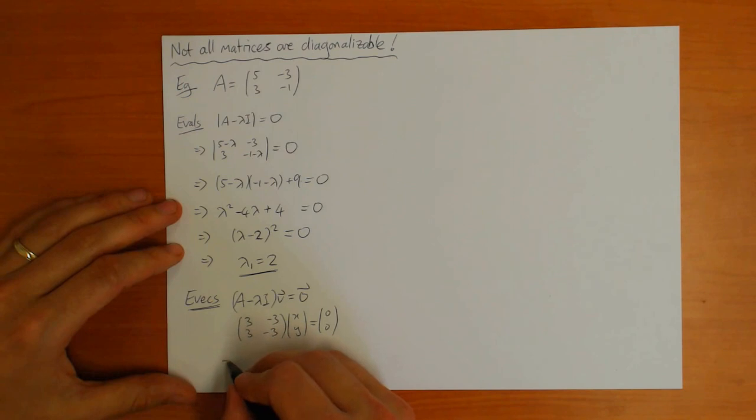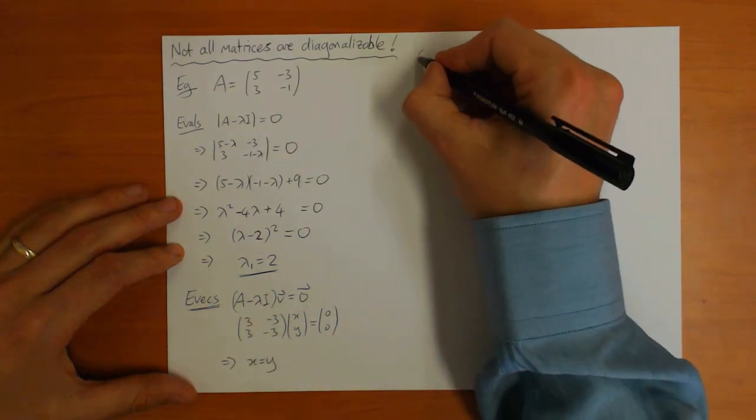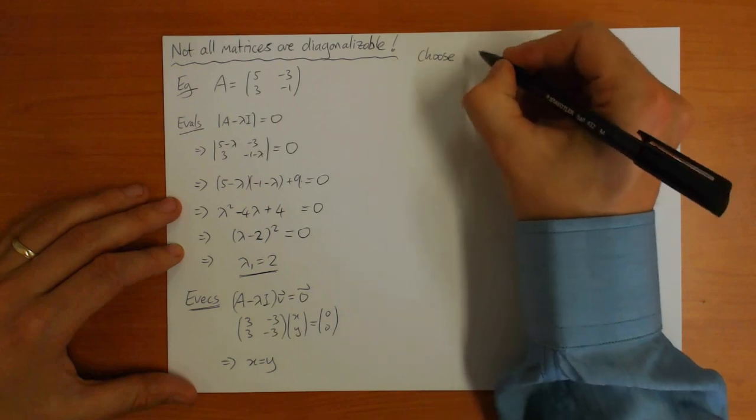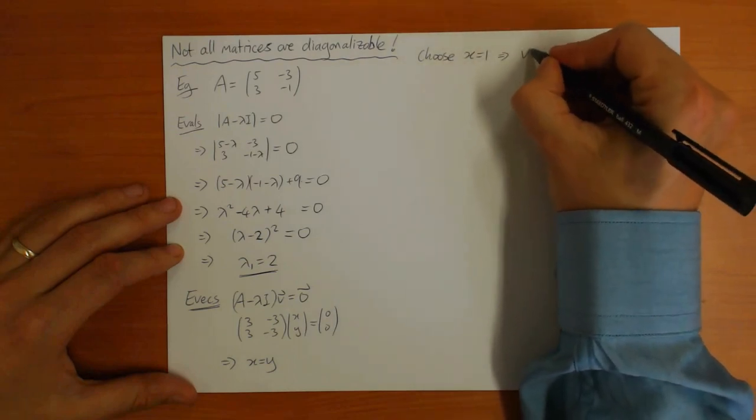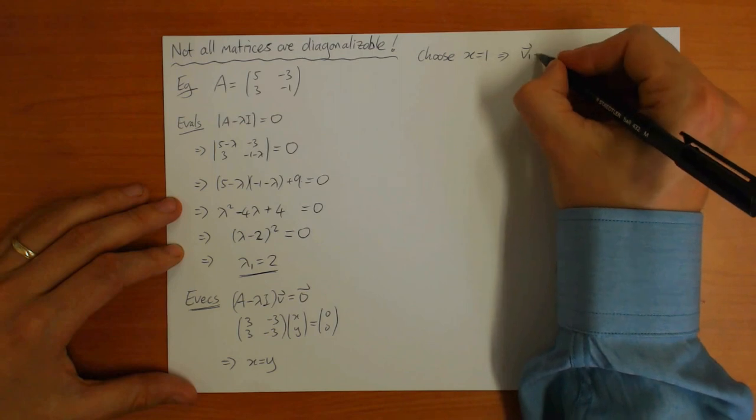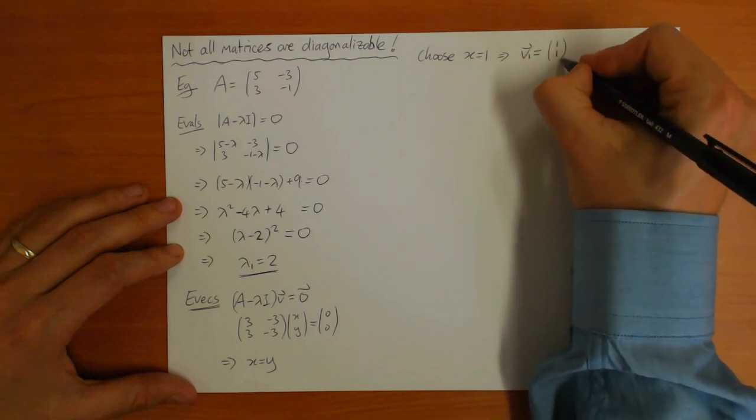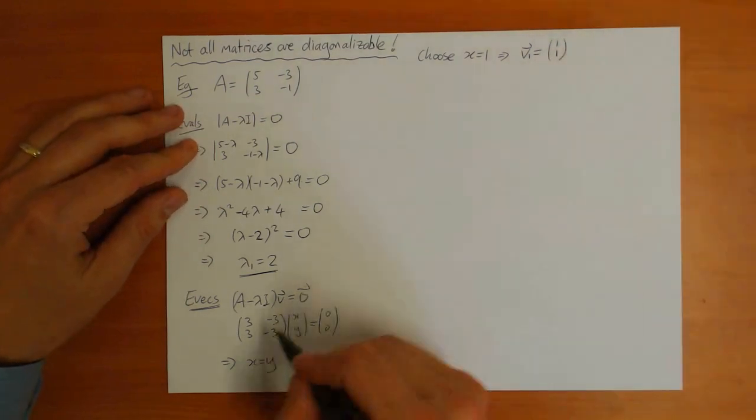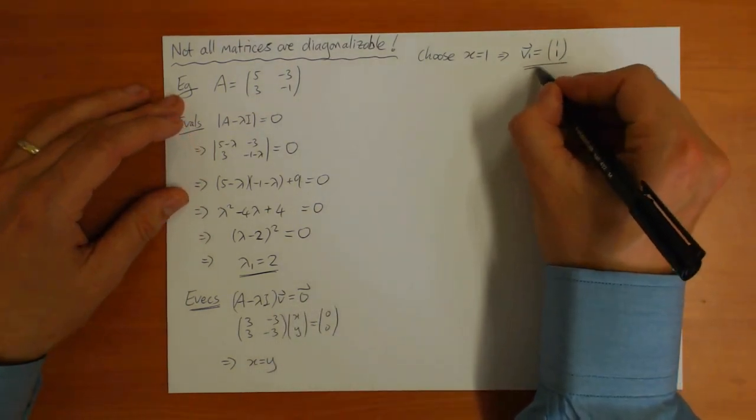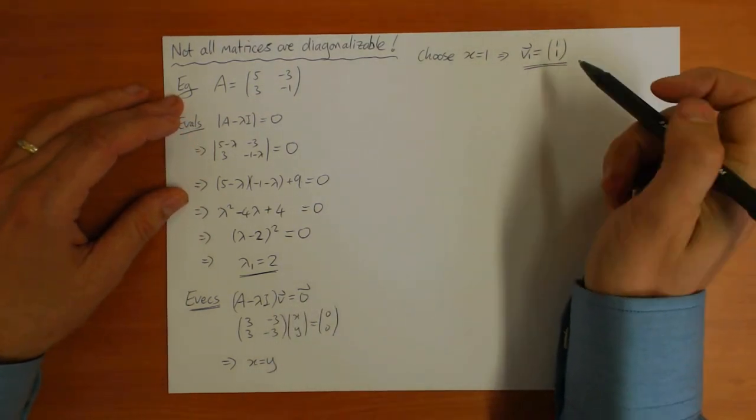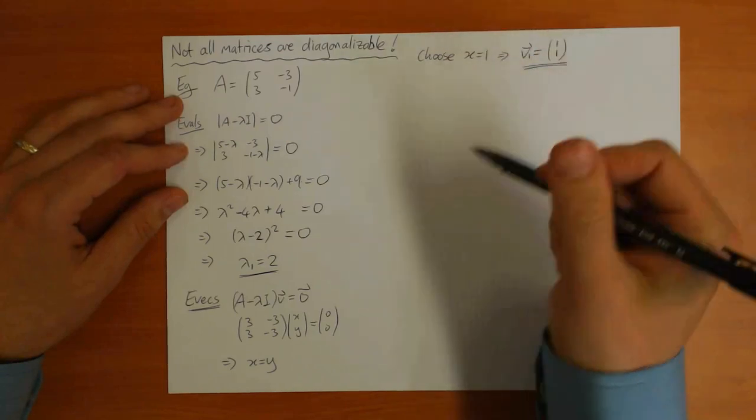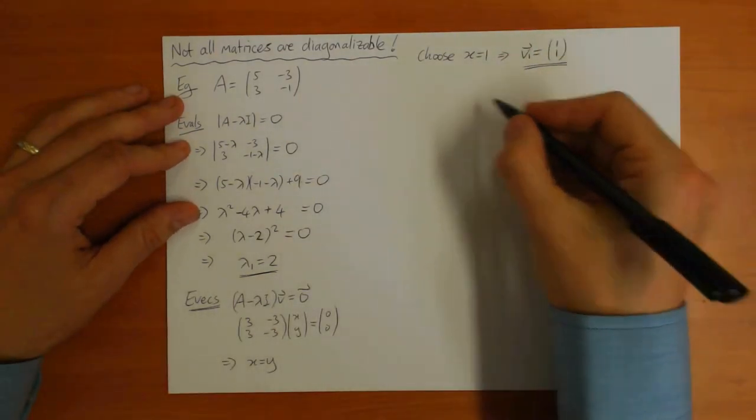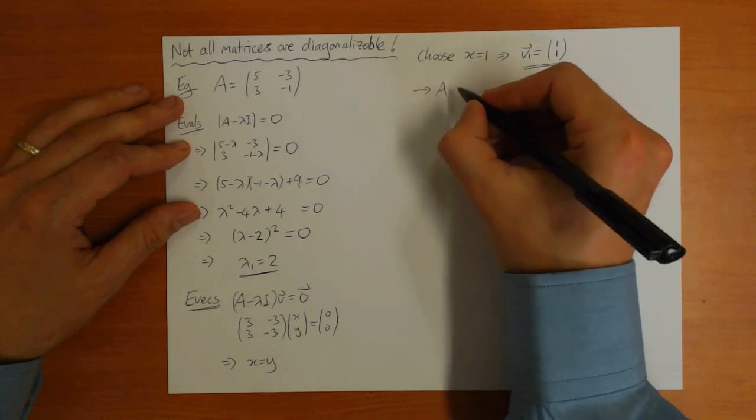This means x equals y. If I choose x equals 1, then we get the eigenvector V1, which is 1, 1. But that's it. So indeed, this matrix does only have one eigenvector. If you've only got one eigenvector, the diagonalization formula doesn't work.